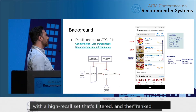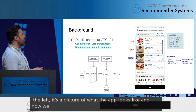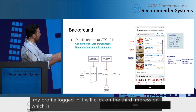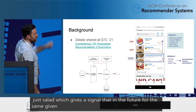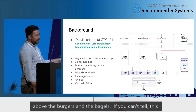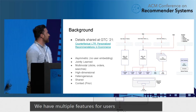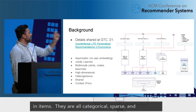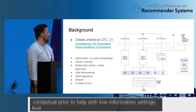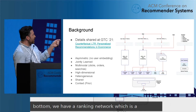Looking at the diagram on the left, it's a picture of what the app looks like and how we learn. For a given context — like Friday at lunchtime on an Android device in Brooklyn with my profile logged in — I'll click on the third impression, which is just salad. This gives a signal that in the future for the same context, I might want to rank the salad above the burgers and the bagels. This is some type of learning-to-rank objective on bandit feedback. We have multiple features for users and items — they're all categorical, sparse, and variable-length lists. Embeddings have vocab maps, and we have a contextual prior to help with low-information settings. They're asymmetric; we don't model users directly. At the bottom we have a ranking network, which is a DCN.